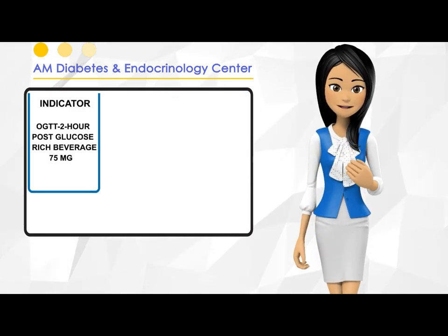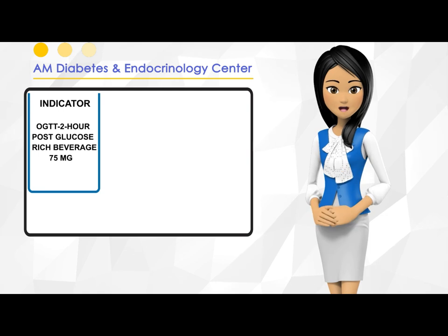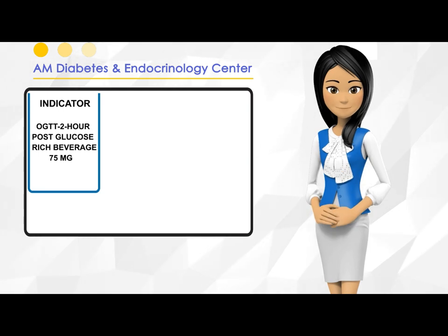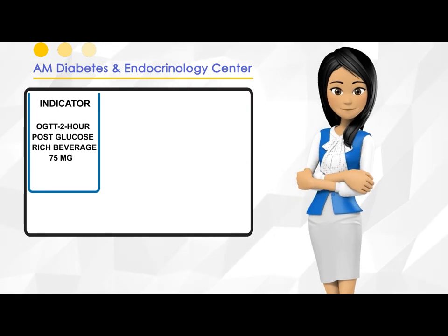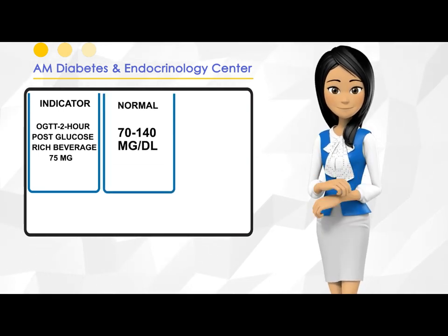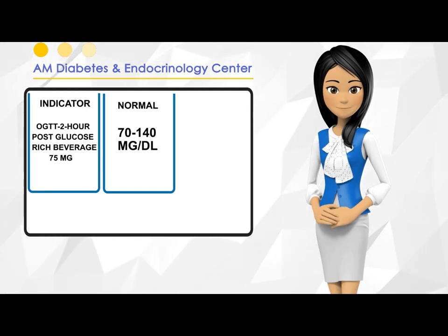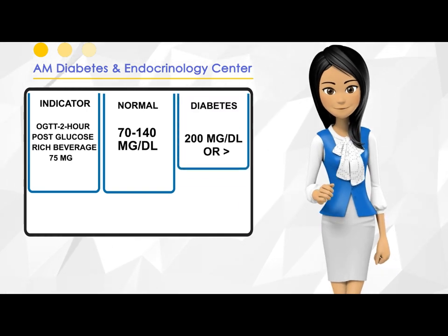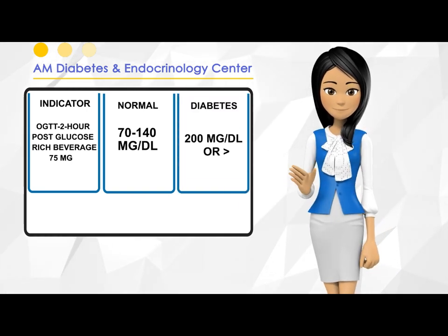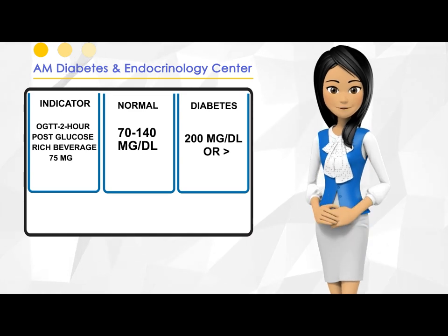Indicator: OGTT, two-hour post-glucose-rich beverage, 75 grams. Normal: 70 to 140 milligrams per deciliter. Diabetes: 200 milligrams per deciliter or greater.